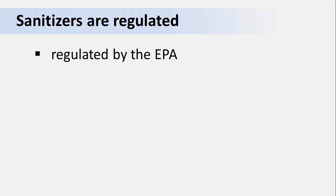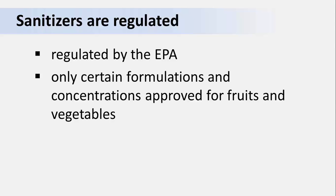Let's start with a look at the legal aspects of sanitizers for wash water. The United States Environmental Protection Agency, or the EPA, regulates sanitizers that come in contact with food the same way it regulates pesticides. If you are in the business of selling fresh produce, you are required by federal law to use only certain sanitizer formulations and concentrations approved by the EPA for washing fruits and vegetables. You cannot mix up your own or substitute other formulations. You must use approved sanitizers according to the directions on the label. As we say in our pesticide education presentations, the label is the law.